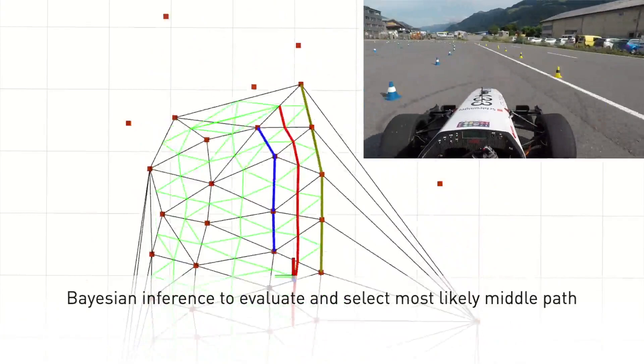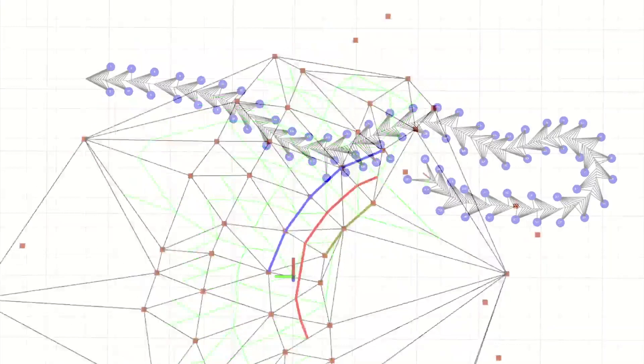A factor graph of cone and car poses is optimized online, allowing us to plan high-performance trajectories for the subsequent 10-lap race.